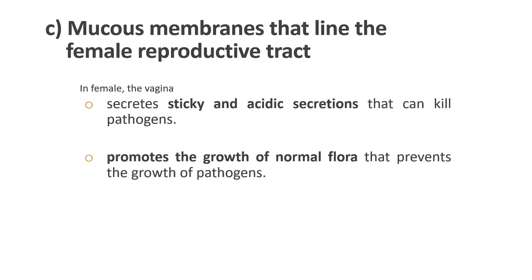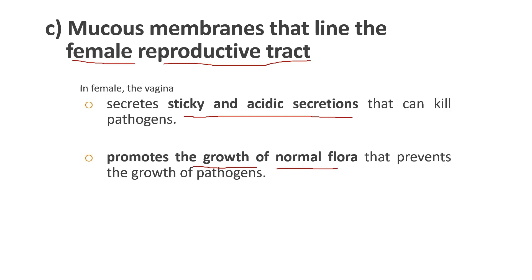Another example is the mucous membrane that lines the female reproductive tract. At the vagina, it secretes a sticky and acidic secretion that is able to kill pathogens. The secretion also promotes the growth of normal flora that prevents the growth of pathogens.